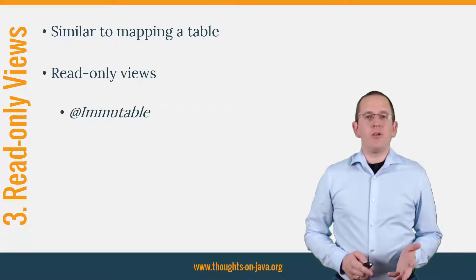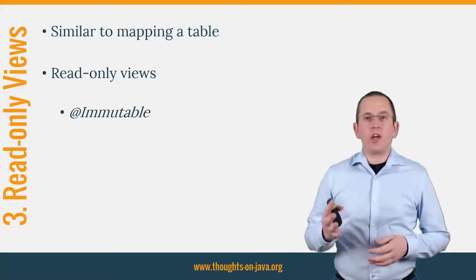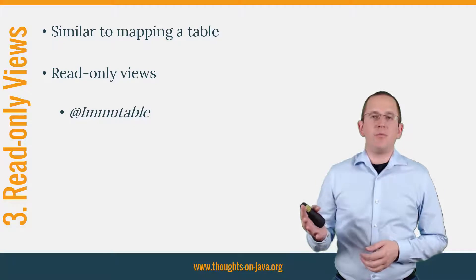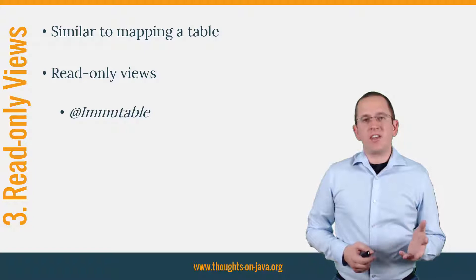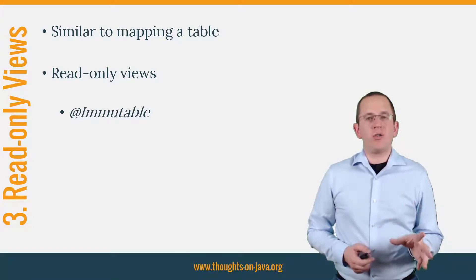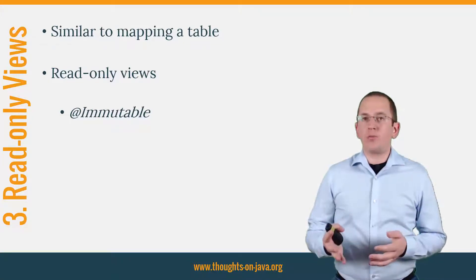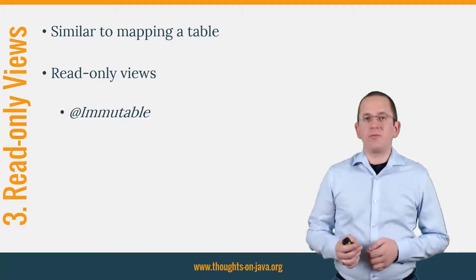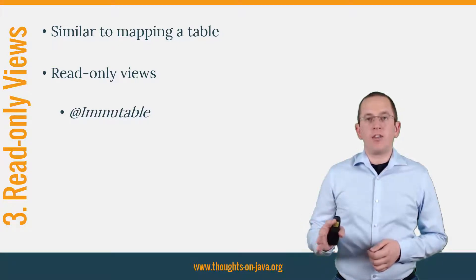3. Map read-only views. From a mapping point of view, database tables and views are pretty similar and you can map both of them to an entity class. The only difference is that some views are read-only and it's a good practice to map them to a read-only entity. By default, Hibernate supports read and write operations for all entities. If you want to make an entity read-only, you have to tell Hibernate that it is immutable. You can do that by annotating the entity class with an immutable annotation.